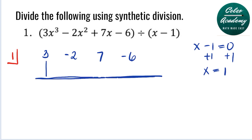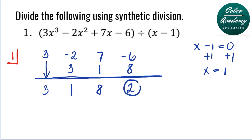The first step is to bring down the leading coefficient 3, and that will be the leading coefficient of the answer as well. Now we multiply 3 by the value indicator 1, so that is 3. Next, we add negative 2 plus 3, that's 1. Then we repeat the process: multiply 1 by the value indicator 1, that's 1. Adding 7 and 1, that's 8. Multiplying 8 and the value indicator 1, that's 8. Adding negative 6 and 8, that's 2. The last number here is our remainder.